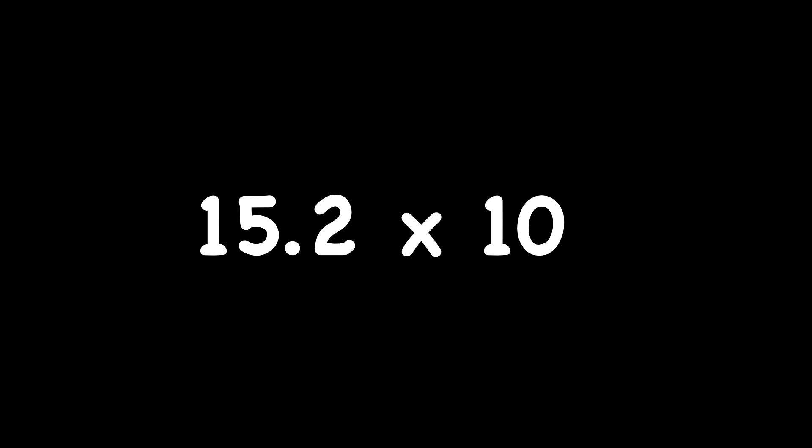Write this one down and see what you can do. Fifteen and two tenths times ten. You should have noticed you were multiplying and multiplying by ten. You needed to move your decimal point one place to the right. That would take it from in front of the two to behind the two — one hundred fifty-two. And then of course you can drop that decimal point off.